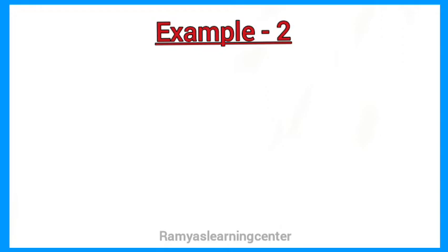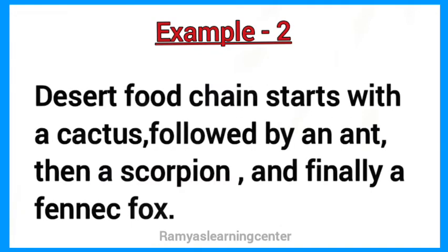Example 2: The desert food chain starts with a cactus, followed by an ant, then a scorpion, and finally a fennec fox.